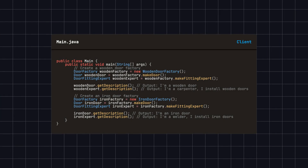Finally, the client uses these factories to create the corresponding doors and installers. We see that wooden door factory encapsulates the creation logic for wooden door and carpenter. Iron door factory encapsulates the creation logic for iron door and welder. This way, for each type of door, we won't mix up the installers. Moreover, the client operates entirely through interfaces, decoupled from the specific implementation details.